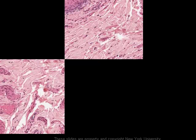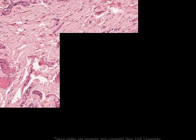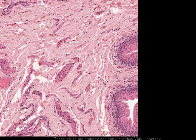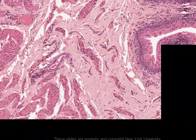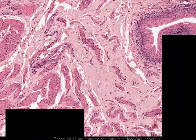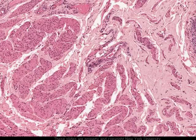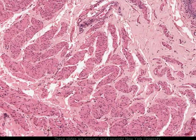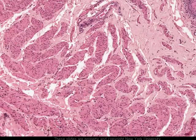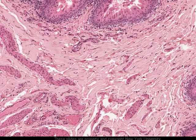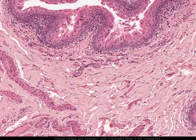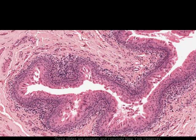Moving outward through the dense irregular connective tissue submucosal layer, encountering more blood vessels, we eventually begin to encounter the smooth muscle that forms a very large part of the wall. Here's the smooth muscle, cut in cross-section and oblique section, with bundles of smooth muscle in very dense connective tissue. That, essentially, is the structure of the urinary bladder.